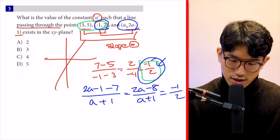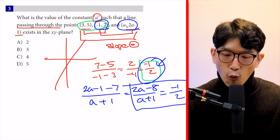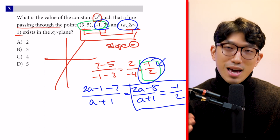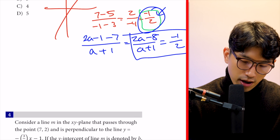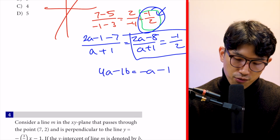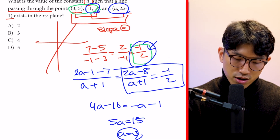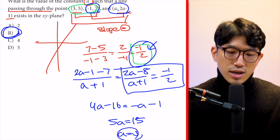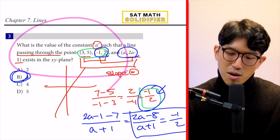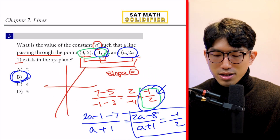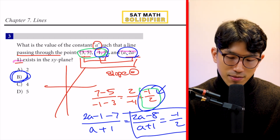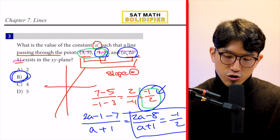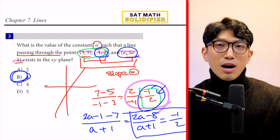Setting (2a − 8)/(a + 1) = −1/2 and cross-multiplying: 4a − 16 = −a − 1, so 5a = 15, giving a = 3. Our answer is choice B. The key takeaway: when a question looks complicated, don't panic — it often reduces to a simple concept. Here it's that all three collinear points share the same slope, which you use to find the unknown value.